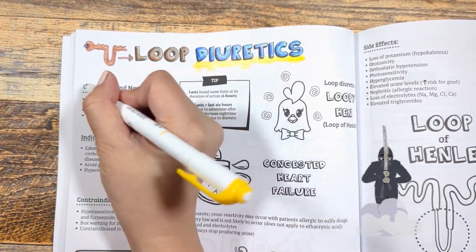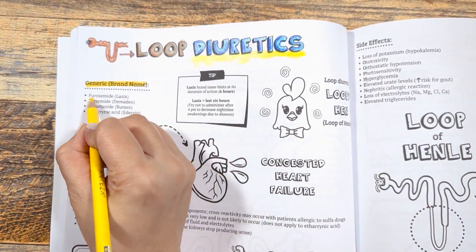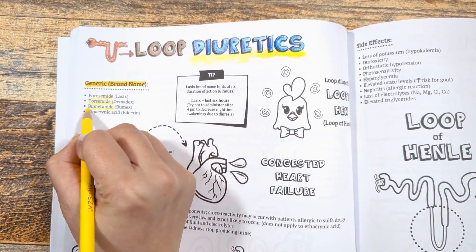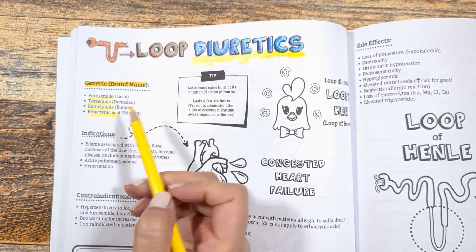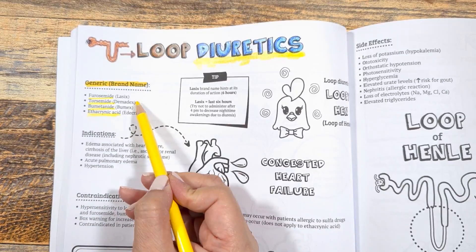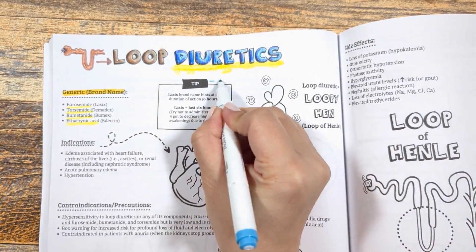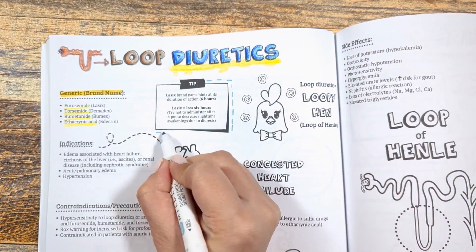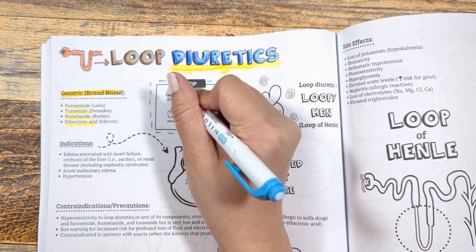There are four main drugs in this class including furosemide, torsemide, bumetanide, and ethacrynic acid. You will see furosemide prescribed more commonly. Bumetanide and torsemide have great bioavailability and are more potent compared to furosemide, so if furosemide fails, then try bumetanide or torsemide.